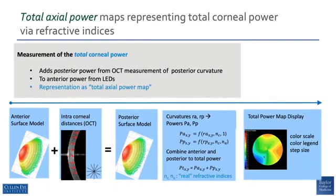To get total axial power representing total corneal power with refractive indices, we add the posterior corneal power from the OCT measurement of the posterior curvature to the anterior power from the LEDs, and that becomes a total axial power map. The swept-source OCT measures the intracorneal distances and undergoes a modeling and calculation to get a total power map display.